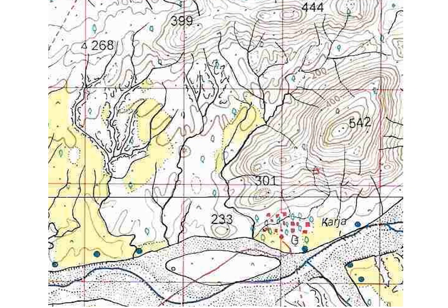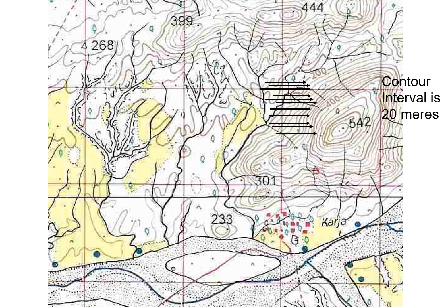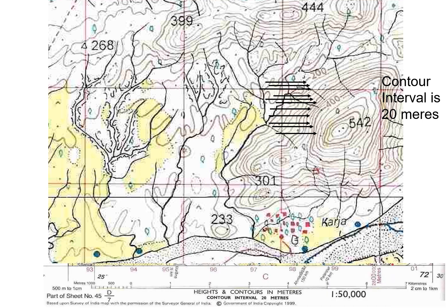Let us have some idea about how contour lines are drawn. The first contour line denotes 200 meters above sea level. The next contour line is drawn at 220 meters, then 240, 260, 280, 300, 320, 340, 360, 380, 400 meters. Contour lines from 200 to 400 are drawn at an interval of 20 meters. This is known as the contour interval of the map, shown at the bottom of your topographical map extract.